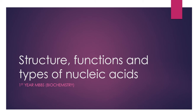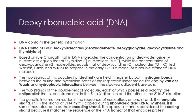The topic of today's lecture is structure, function, and types of nucleic acid. There are two types of nucleic acid: DNA and RNA. Today we will discuss the basic structure of DNA, called deoxyribonucleic acid. DNA is mainly the hereditary material of living systems and it contains four types of nucleotides: deoxyadenylate, deoxyguanylate, deoxycytidylate, and deoxythymidylate.